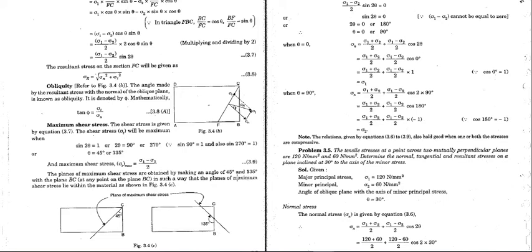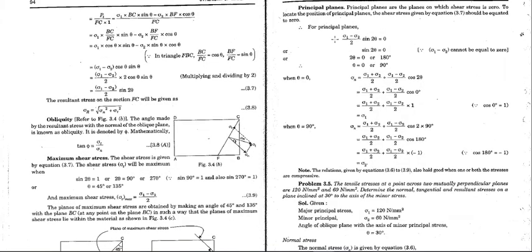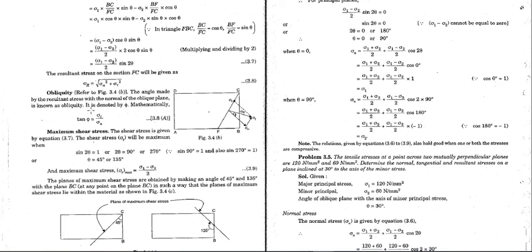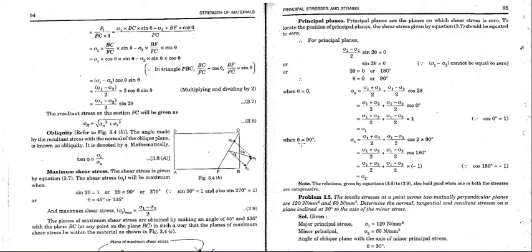To find the principal planes, set the shear stress equation to zero. This gives θ = 0° and θ = 90°. At θ = 0°, σ_n = σ₁, and at θ = 90°, σ_n = σ₂. So for mutually perpendicular forces acting on a specimen, the principal planes are at 0° and 90°, where the normal stresses equal σ₁ and σ₂ respectively.